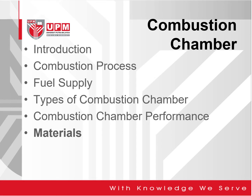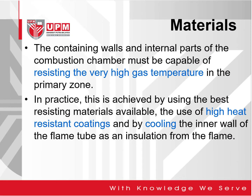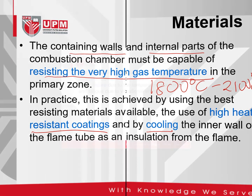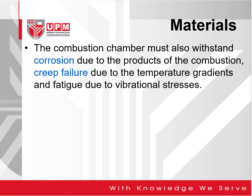We now move into the last part of the combustion chamber topic, which is the material. The containing wall and internal parts of the combustion chamber must be capable of resisting the very high temperatures in the primary zone — approximately 1,800 to 2,100 degrees Celsius. In practice, this is achieved by using the best heat-resisting materials available, applying high heat-resistant coatings, and using cooling methods on the inner wall of the flame tube as insulation from the flame. The combustion chamber must also withstand corrosion due to the products of combustion, creep failure due to temperature gradients, and fatigue due to vibrational stresses.